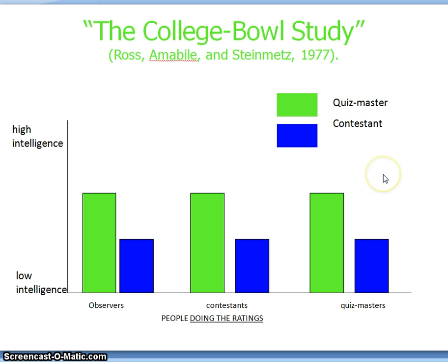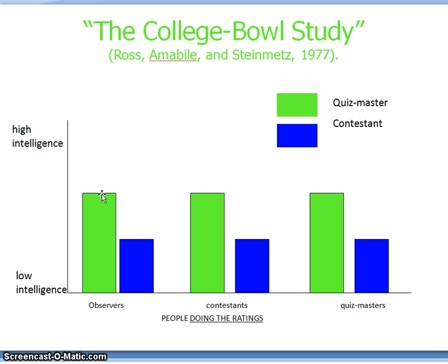This is taken to be an example of the fundamental attribution error because all three categories of individuals are overlooking an important situational factor. Just take the observers: why would you think the quiz masters are more intelligent than the contestants? The quiz masters knew all the answers and the contestants only knew some — but what they seem to be failing to correct for is the fact that if the quiz masters get to choose the questions, of course they're going to choose questions they know the answers to. Psychologists interpreted this as an error: observers were failing to correct for the situational factor that the quiz masters got to choose which questions they asked.